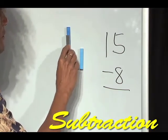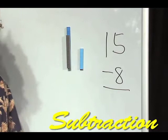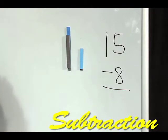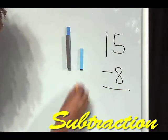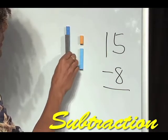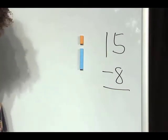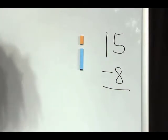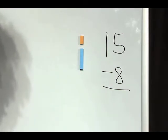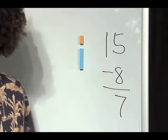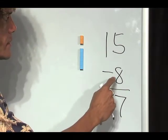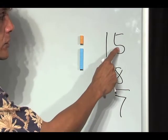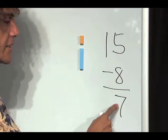Now we know we've played 'want to be a 10.' What does 8 need to be a 10? Needs 2. So you can see a 2 would fit right there. Take away 8 from the 10 and I have 7. So what I did in my mind is add 2 to 5 to get 7.